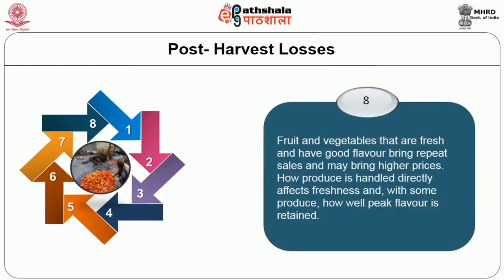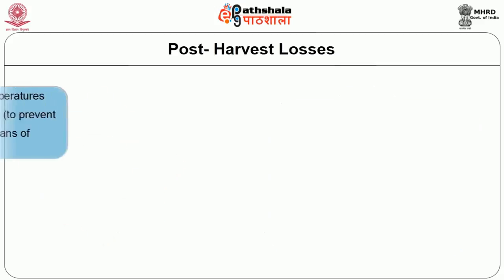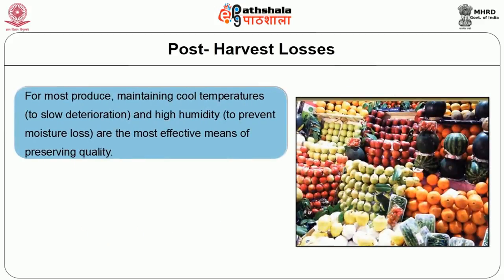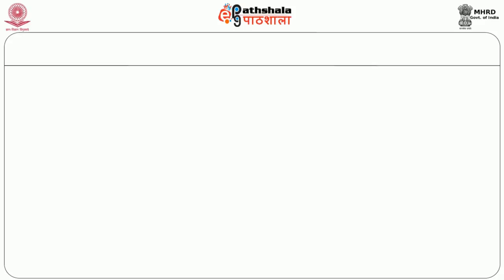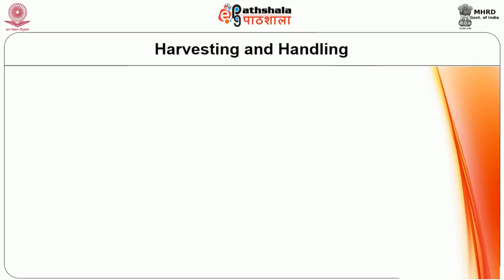Fruit and vegetables that are fresh and have good flavour bring repeated sales and may bring higher prices. How produce is handled directly affects the freshness and how well peak flavour is retained. For most produce, maintaining cool temperature to slow down deterioration and high humidity to prevent moisture losses are the most effective means of preserving quality. However, there are several things producers, handlers and retailers can do to assure that fruit and vegetables going to the market or into storage are of high quality.